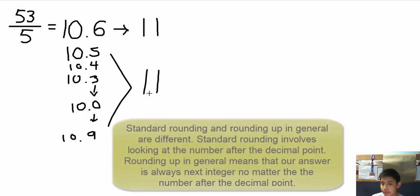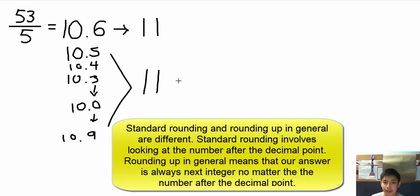This is different from standard rounding, because standard rounding, the rule is, it really depends on the number after the decimal point to determine if you round up or round down. So in standard rounding, anything from 10.5 upwards, we round up to the next integer. So this will be 11. And anything from 10.4 downwards, we round down back to 10. So we keep the integer before the decimal point.